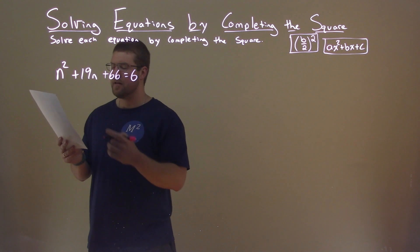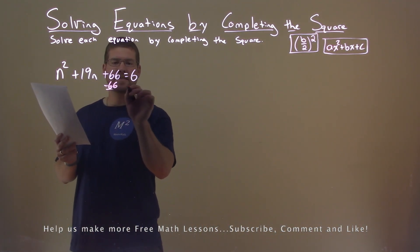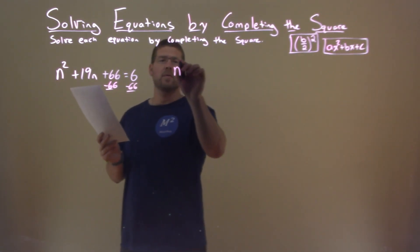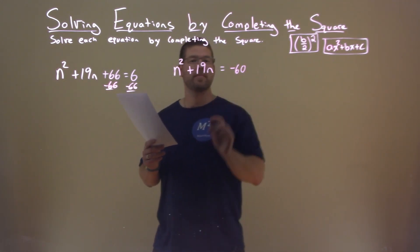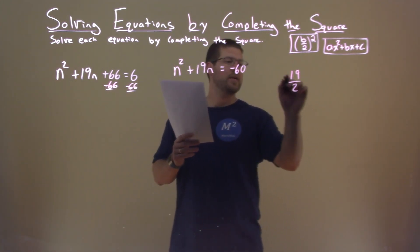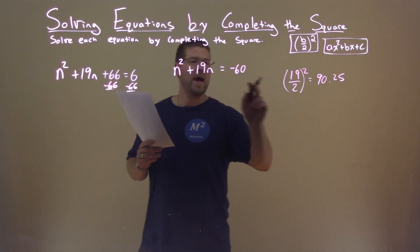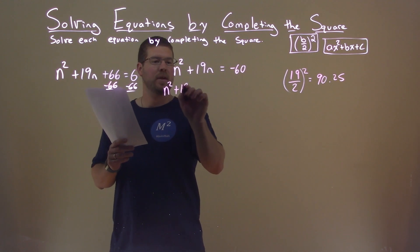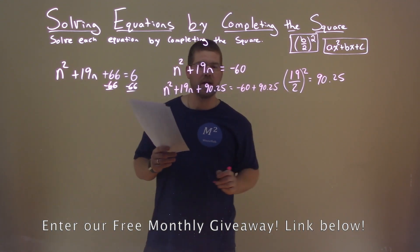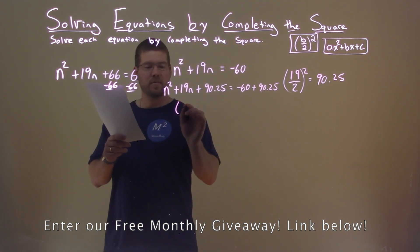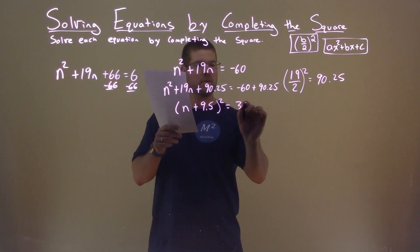We're given this problem right here: n squared plus 19n plus 66 equals 6. We want to solve this by completing the square. First thing I want to do is subtract 66 from both sides, leaving me with n squared plus 19n equals 6 minus 66, which is negative 60. Looking at my B value of 19 — dividing by 2 and squaring that comes out to be 90.25. Adding 90.25 to both sides: n squared plus 19n plus 90.25 equals negative 60 plus 90.25. The left-hand side is a perfect square — n plus 9.5, all squared — and negative 60 plus 90.25 is positive 30.25.